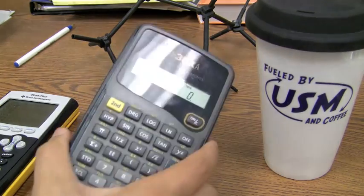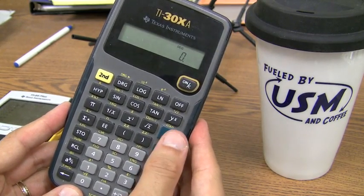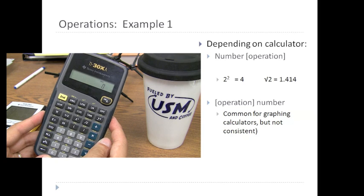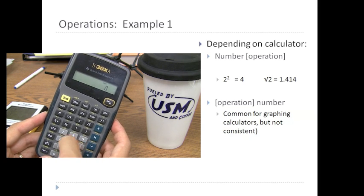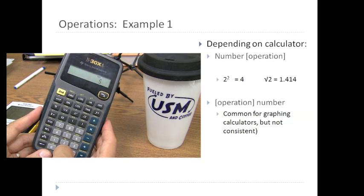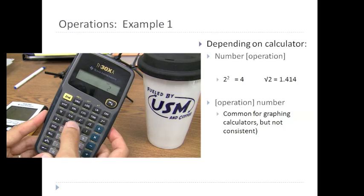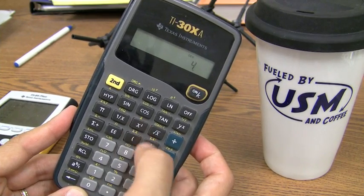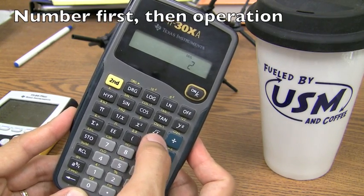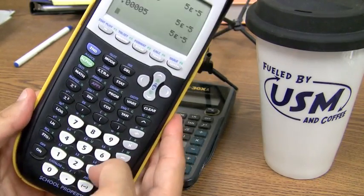Many calculators handle more complex operations beyond the standard four functions — add, subtract, multiply, and divide — differently depending on the type. How you enter the command matters. For most older calculators, the number is written first: enter 2, then press x-squared to get the answer. Or for the square root of 2, you enter 2 and then press the square root function key. But on other calculators, how you enter those same numbers varies.